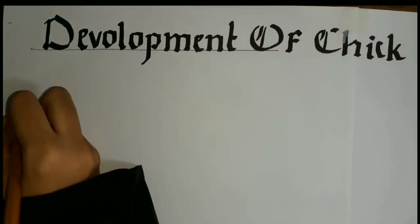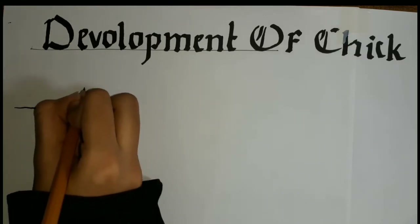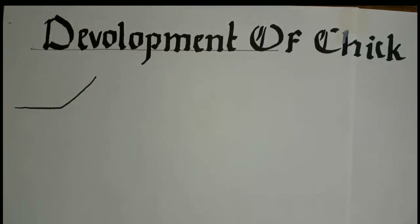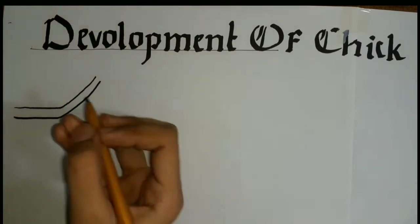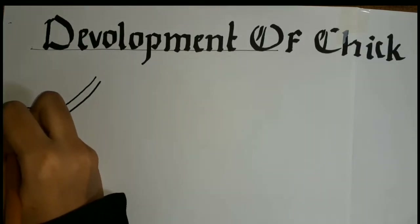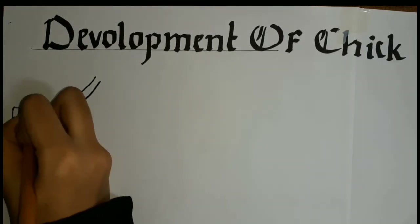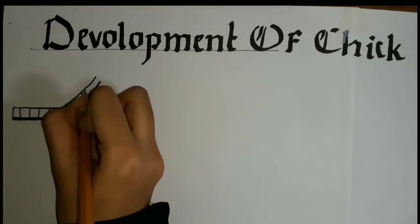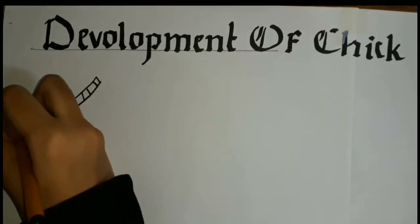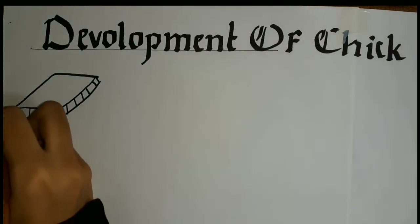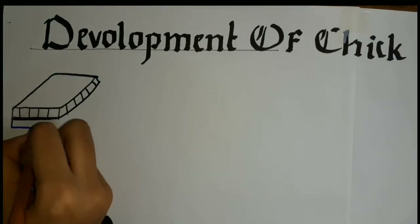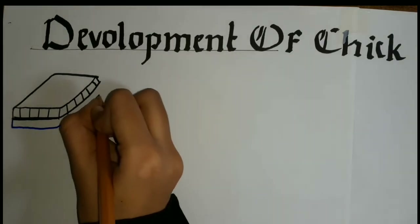In the last lecture, we covered the formation of the epiblast and hypoblast, how the primitive streak is formed and how it is functionally equivalent to the dorsal lip of the blastopore of frog. We have also discussed about the archenteron formation.